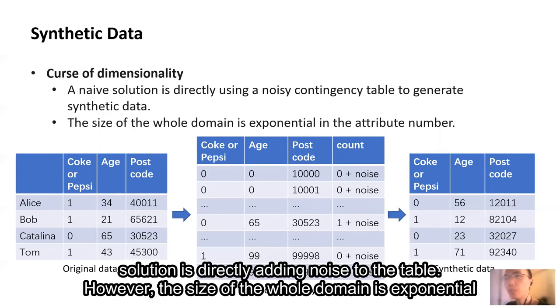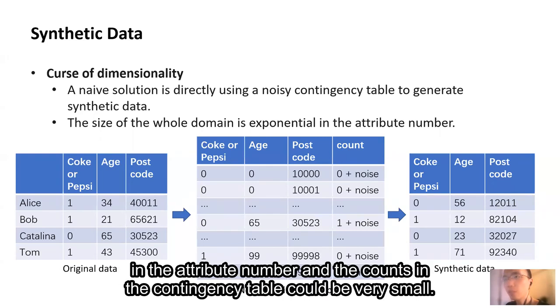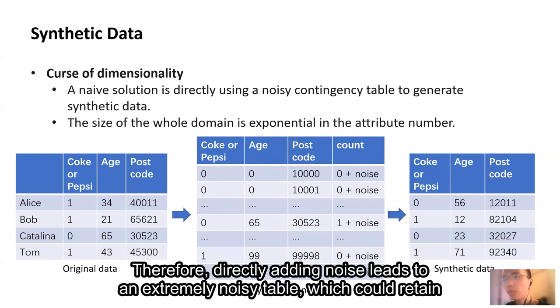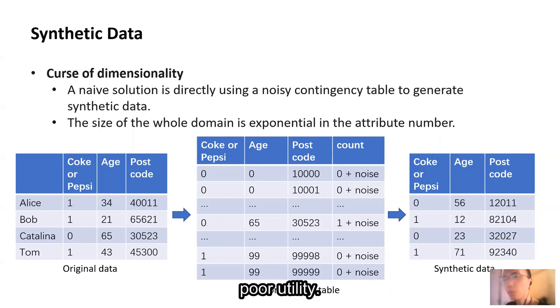A naive solution is directly adding noise to the table. However, the size of the whole domain is exponential in the attribute number, and the counts in the contingency table could be very small. Therefore, directly adding noise leads to an extremely noisy table, which could retain poor utility.